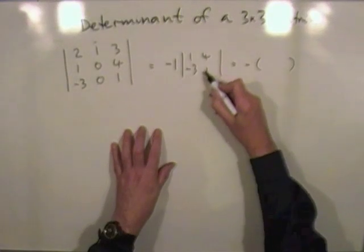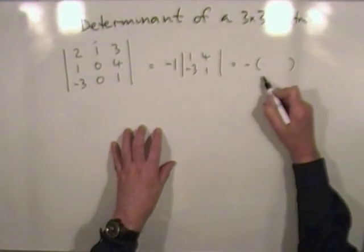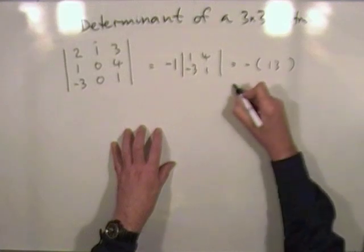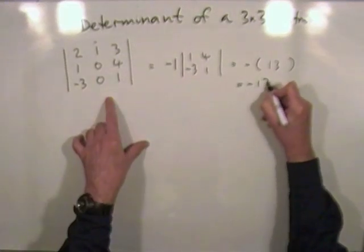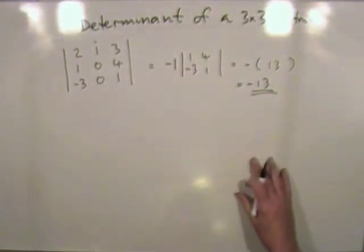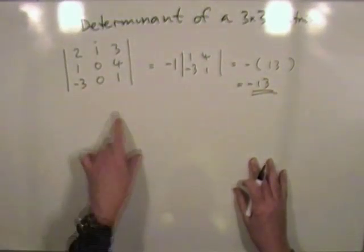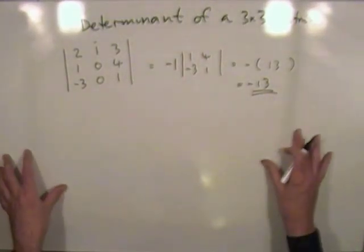Which means I've just got negative of whatever this comes to. One take away negative twelve, that's going to be one plus twelve which is thirteen. So the determinant of that matrix is negative thirteen. That's very quick because you've got zeros to home in on there. What about the alternative pattern? Will that be longer?